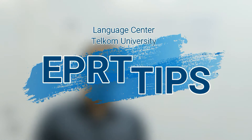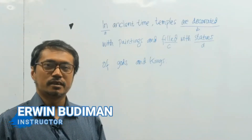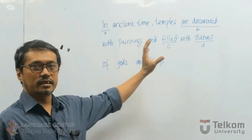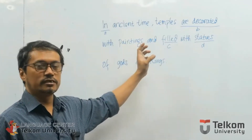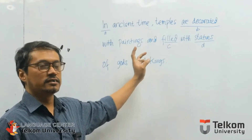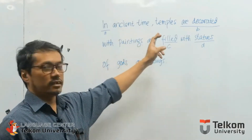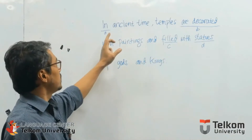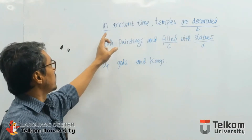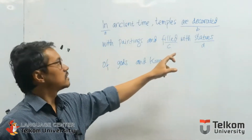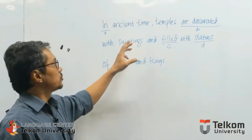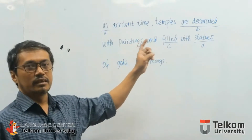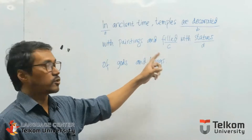Hello and welcome to EPR videos. Today I'm going to show you how to find the incorrect answer, because this type of question is to identify the incorrect word or phrase that is underlined. As you can see here, we have four answer choices. All you have to do is to find one answer choice that is incorrect.